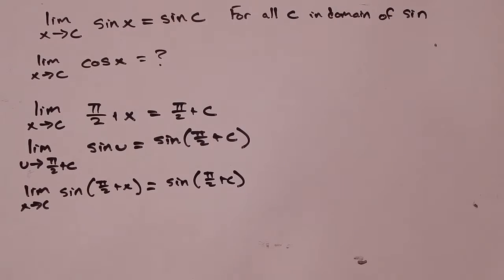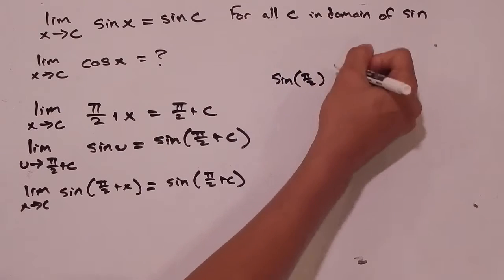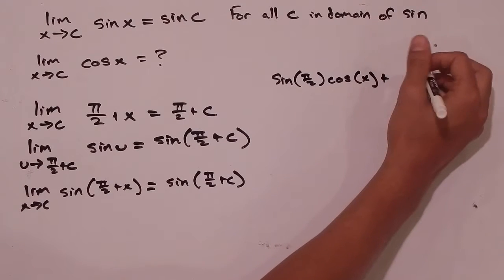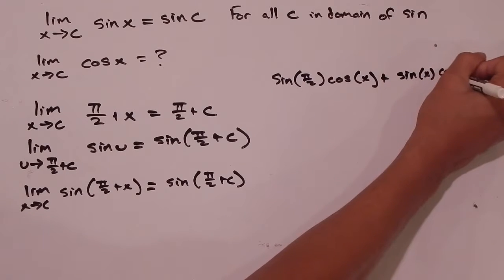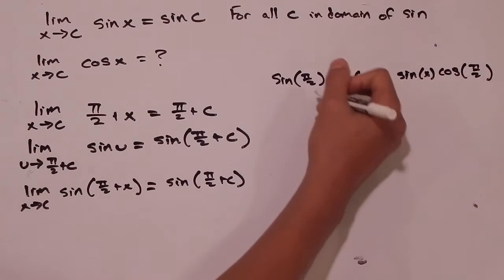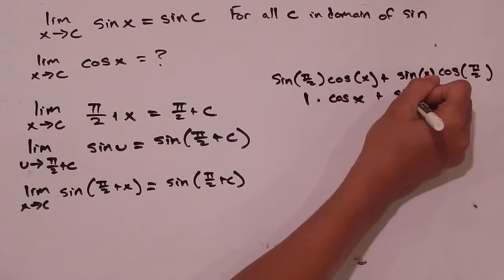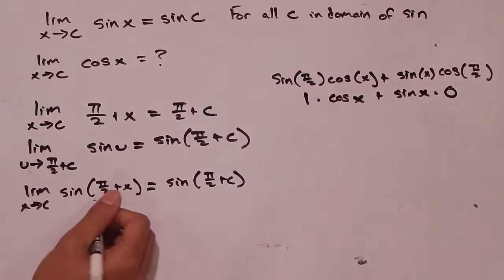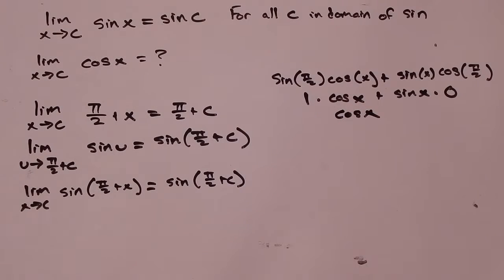What is sine of π/2 plus x? We're going to use one of our trig identities to find that out. That's just going to be sine of π/2 times cosine of x, plus sine of x times cosine of π/2. Sine of π/2 is just 1, cosine of x is cosine of x, sine of x is sine of x, but cosine of π/2 is 0. So we get that sine of π/2 plus x is equal to cosine of x — a trig identity you might have already been familiar with.